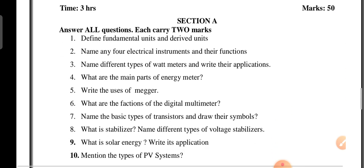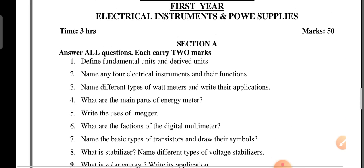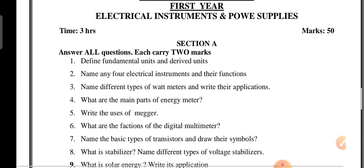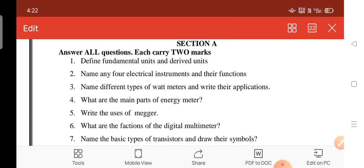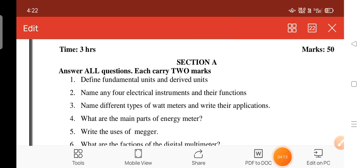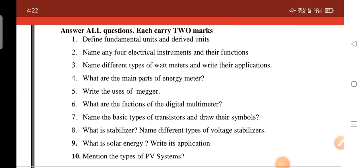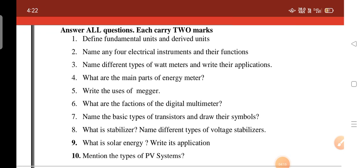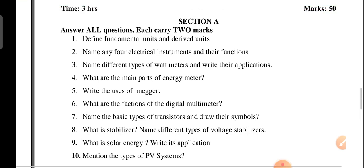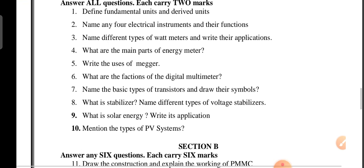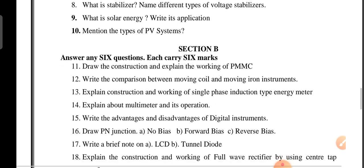Next, Paper 3 — Electrical Instruments and Power Supplies. Section A questions and Section B questions are covered in this model question paper.